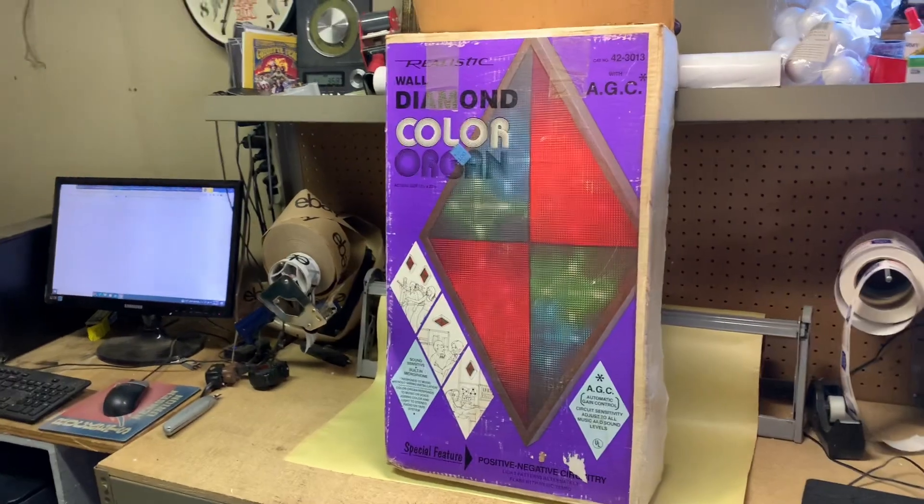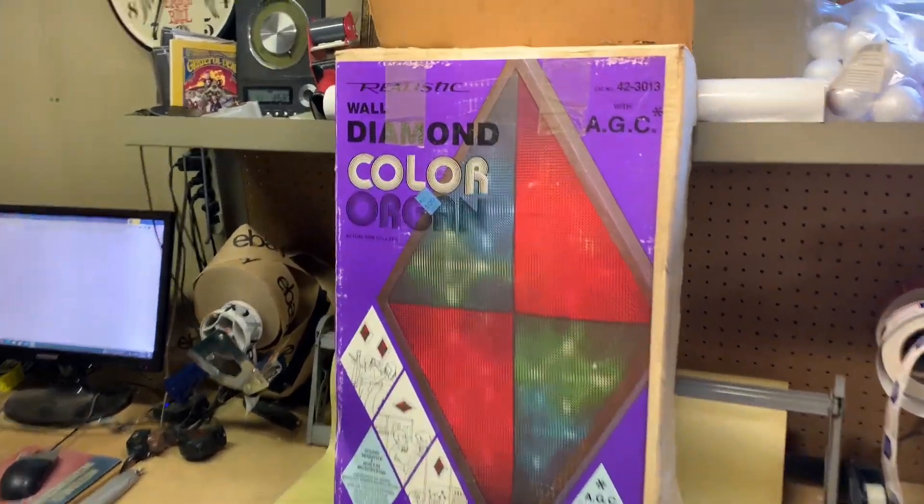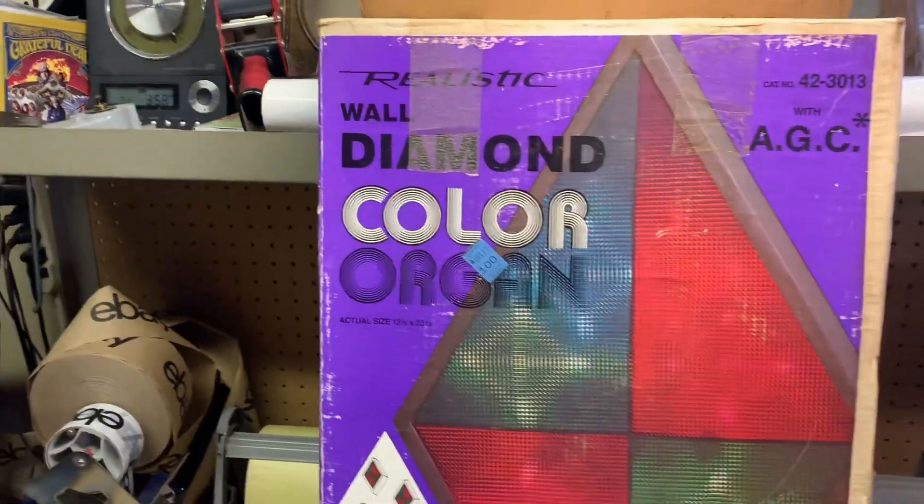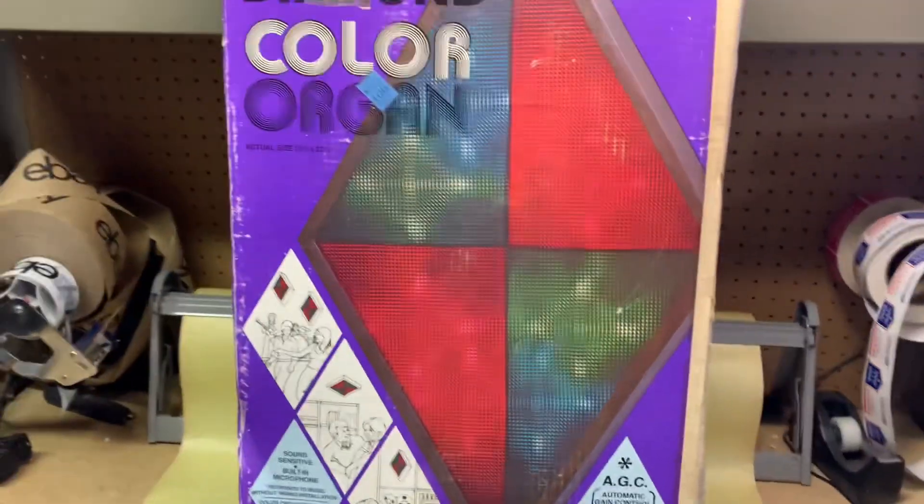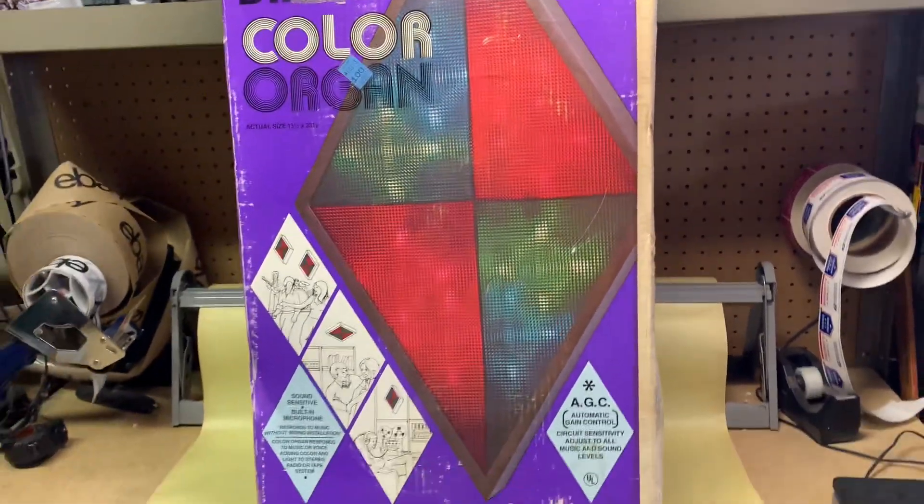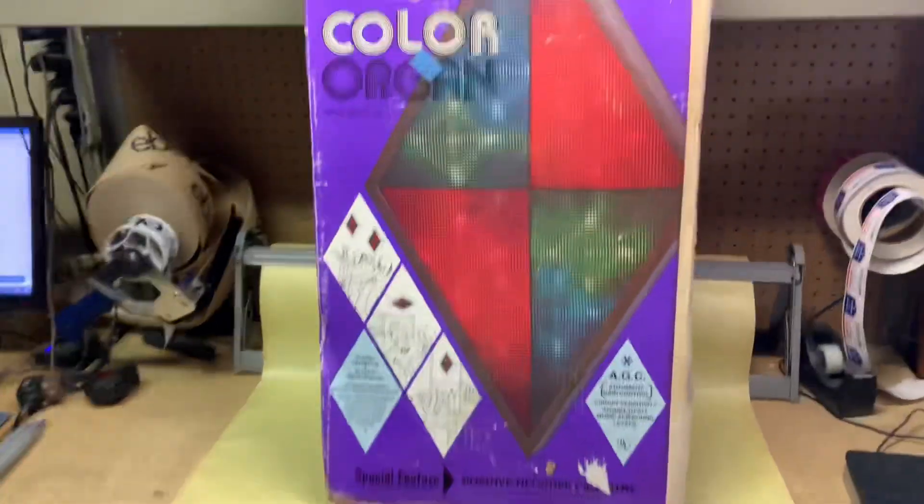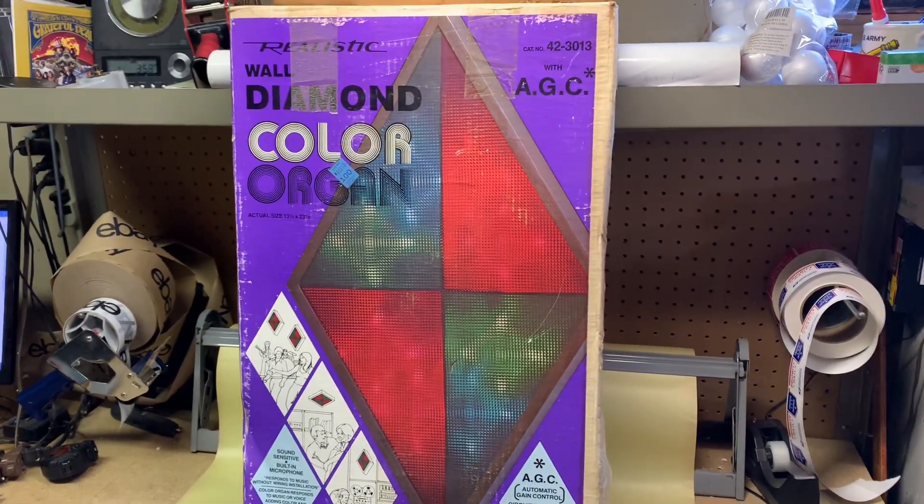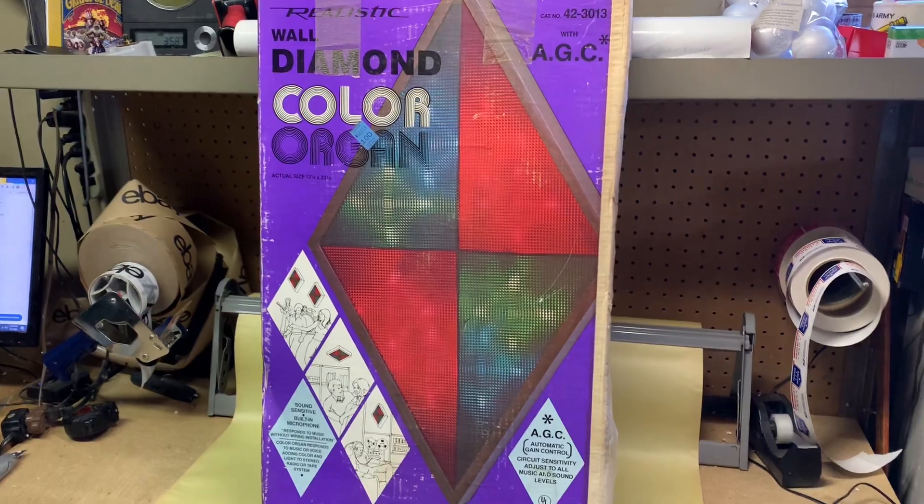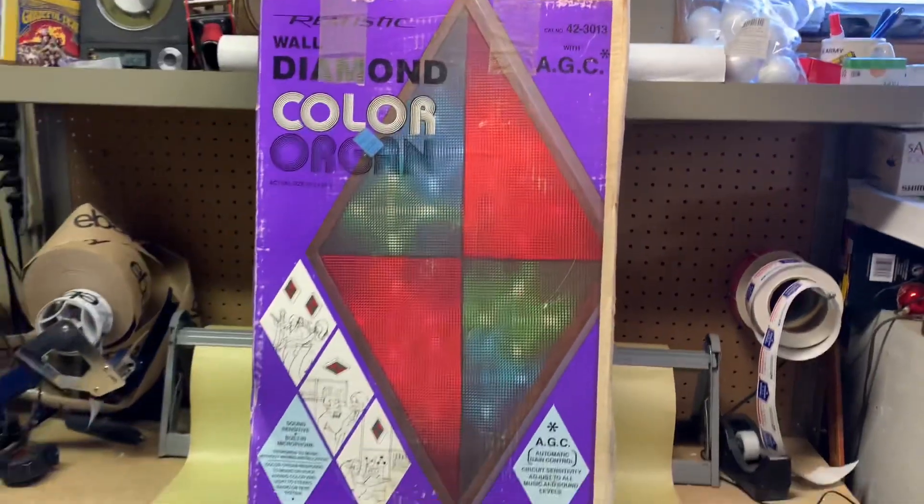Well, this is a vintage color organ made by Realistic, sold by Radio Shack. It flashes lights to whatever sound is out there. It has a built-in microphone. This one is not wired. It's a diamond shape.